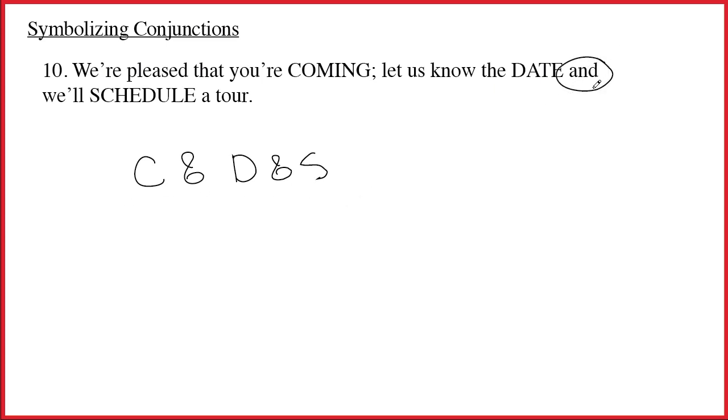But in fact, this and is really, in this case, it seems to be implying an if-then relationship. Because what does the sentence really mean? It says, we are pleased that you're coming. And if you let us know the date, then we'll schedule a tour. And of course, since that's an arrow, then you need the parentheses. So this is wrong. This one is correct. This is hideously bad news.